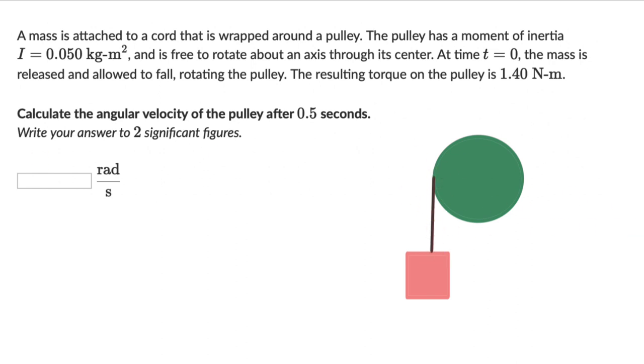Now there is some information that we already know, which is that the moment of inertia of this pulley is 0.05 kilogram meter square. Let's write that. This is 0.05 kilogram meter square. And let's say this instant is t equals 0. This instant right here is t equals 0, and this mass starts falling.